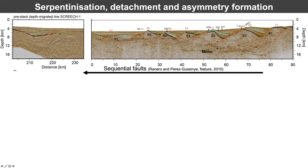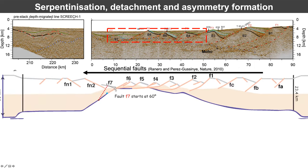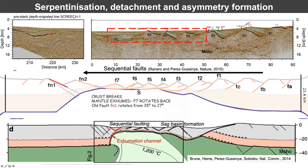But if we look at the larger scale asymmetry shown in these two profiles of the West Iberian-Newfoundland margin and compare it with the area of the S reflector, we see that this is much more restricted and that it cannot be responsible for the asymmetry that starts earlier. In 2010, Thessa and I suggested that this asymmetry would be the result of an emergence of sequential faults that always cut in the hanging wall of the previous fault, resulting in asymmetric margins.